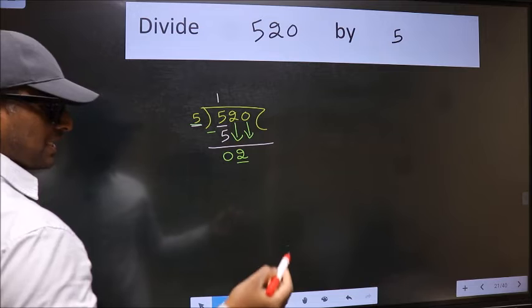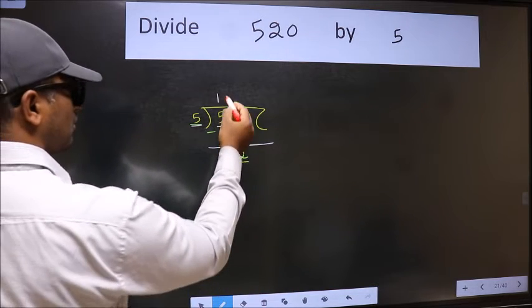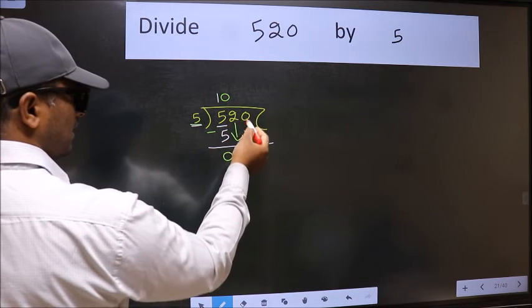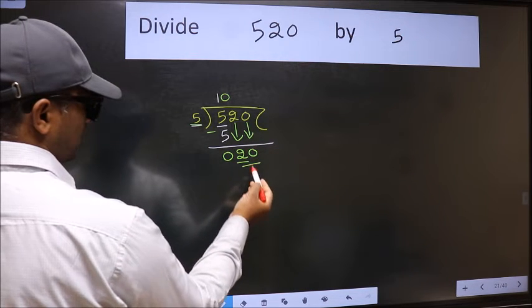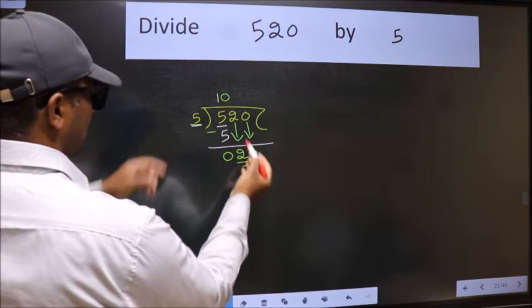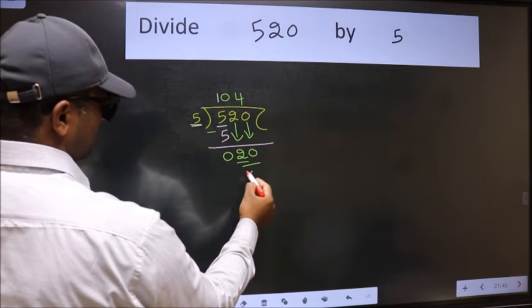And the rule to bring down the second number is we should put 0 here. Then only we can bring this number down. Now 20. When do we get 20 in the 5 table? 5 fours 20.